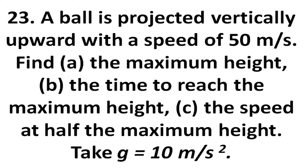Chapter number 3, rest and motion kinematics, question number 23. A ball is projected vertically upward with a speed of 50 meters per second. Find A, the maximum height; B, the time taken to reach the maximum height; C, the speed at half the maximum height. Take g equal to 10 meters per second square.